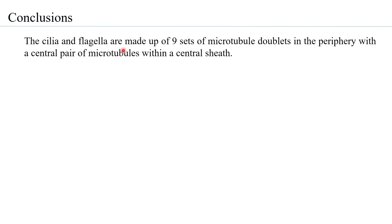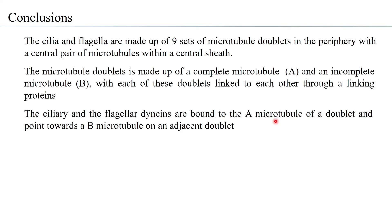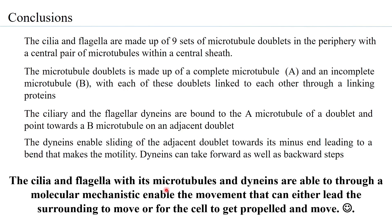In conclusion: cilia and flagella are made up of nine sets of microtubule doublets at the periphery with a central pair within a central sheath. Each doublet has a complete A microtubule and an incomplete B microtubule, linked to adjacent doublets through nexin. The ciliary and flagellar dyneins are bound to the A microtubule and point toward the B microtubule of the adjacent doublet, enabling sliding toward the minus end to produce bending and motility — ultimately propelling the cell or moving the surrounding medium.